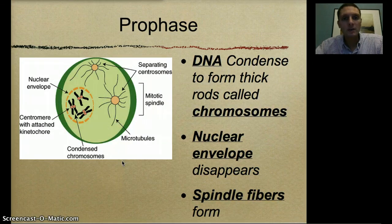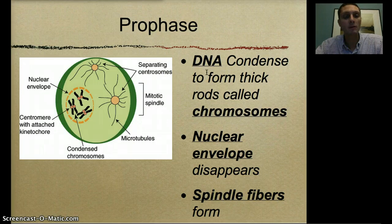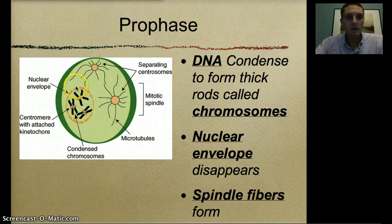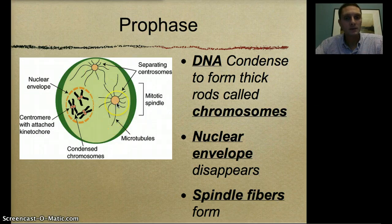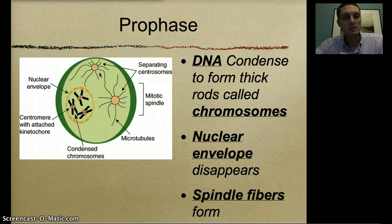Prophase is the first portion of mitosis. In this stage, the DNA actually condenses to form thick rods that we call chromosomes. The nuclear envelope starts to disappear — it disintegrates so that the chromosomes can be removed from the nucleus and moved around. Then we start to see spindle fibers form from our centrioles. At the centriole position there are centrosomes, and from those, spindle fibers are released — like long fingers that will help move the chromosomes.